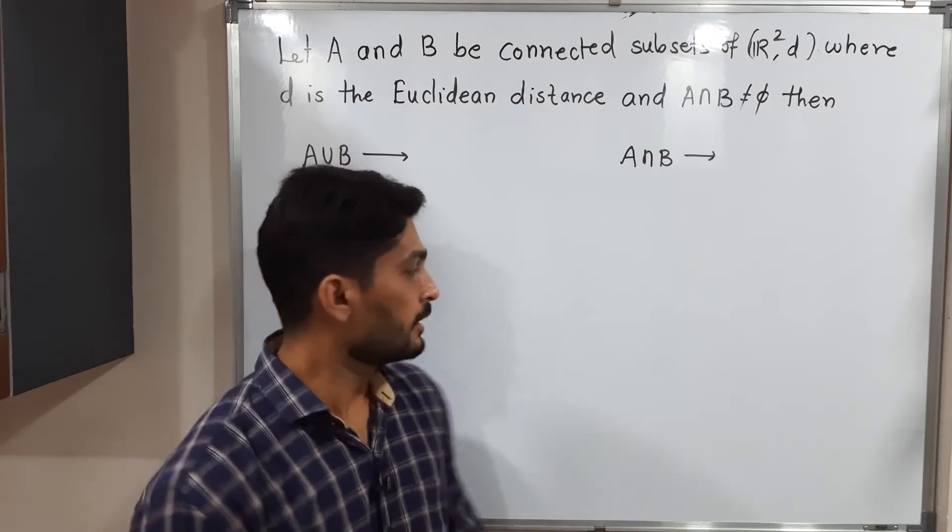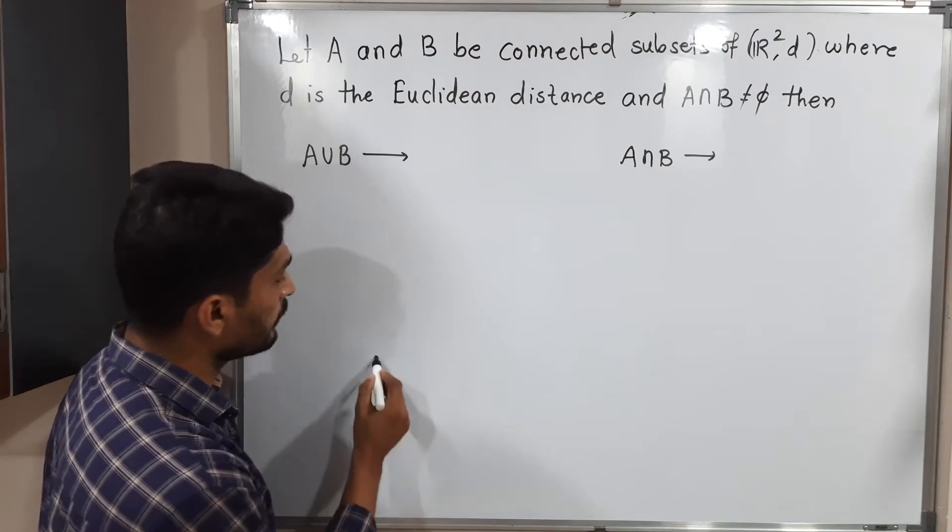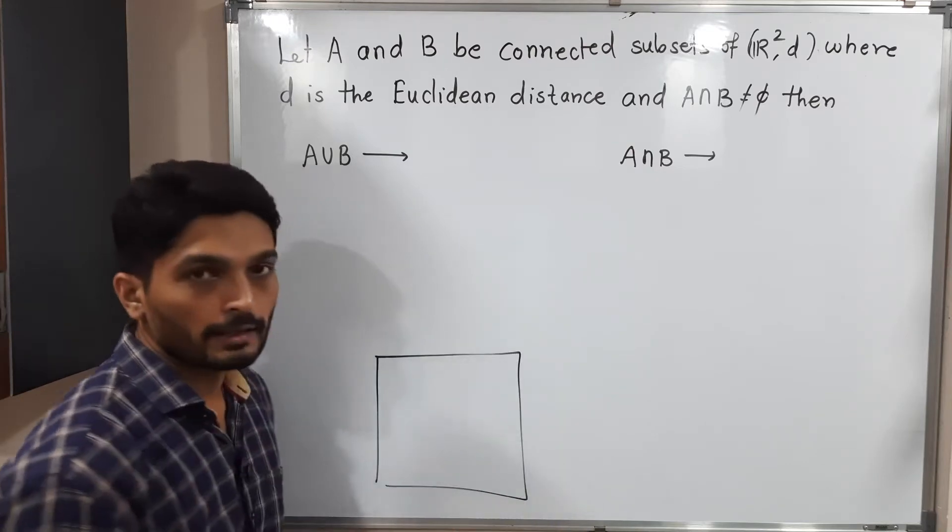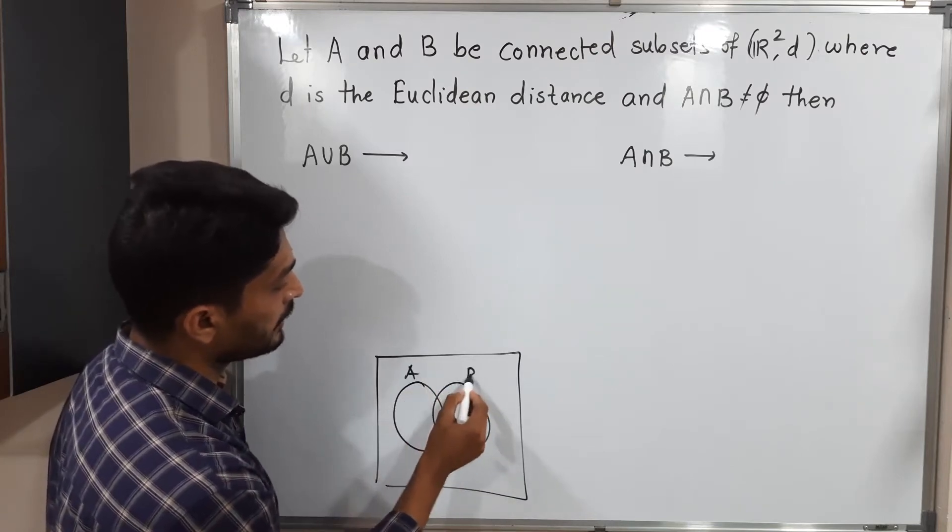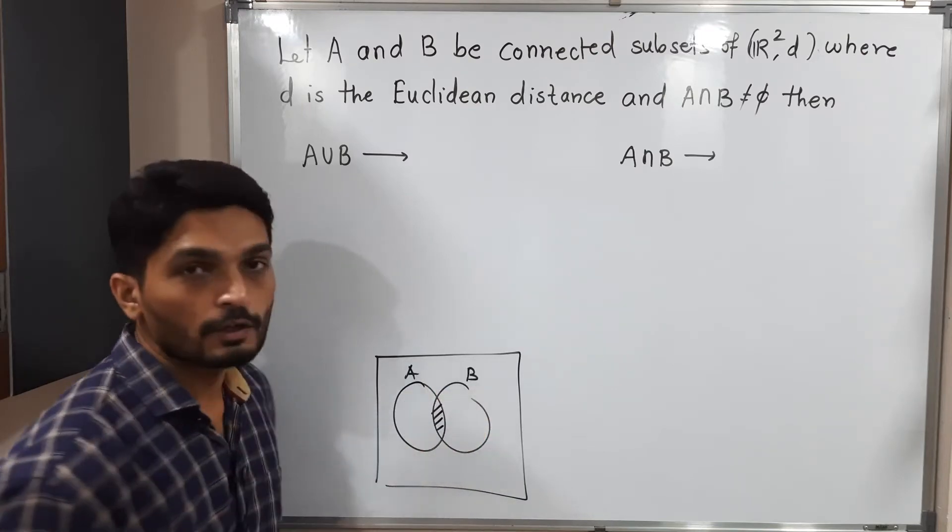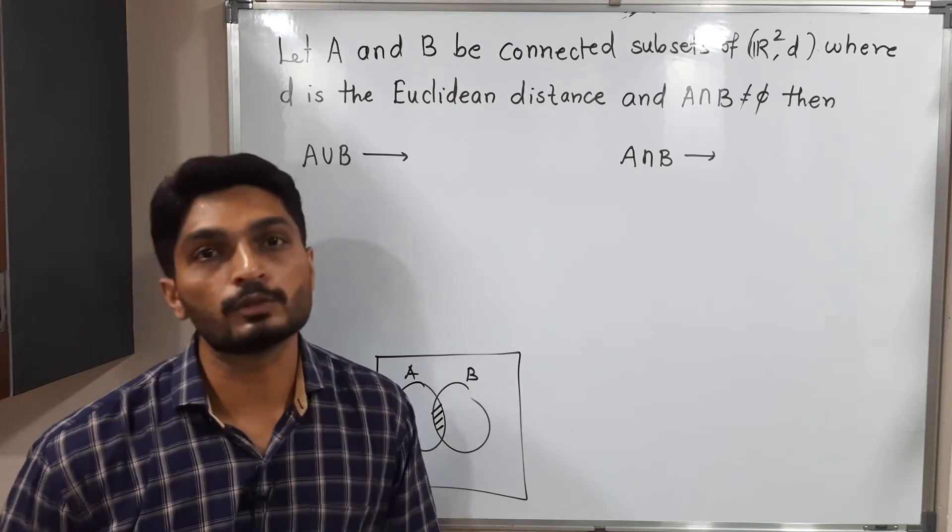Let us discuss. One result we have already seen. Let us recall it and then we will go further. That result is: if you have two connected sets A and B, and if the intersection is not equal to phi, then their union is also connected.